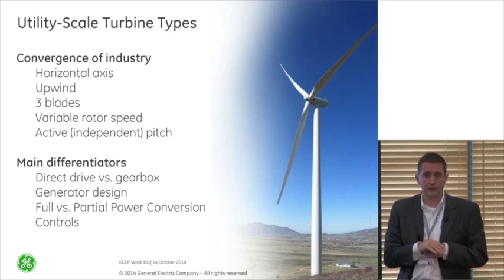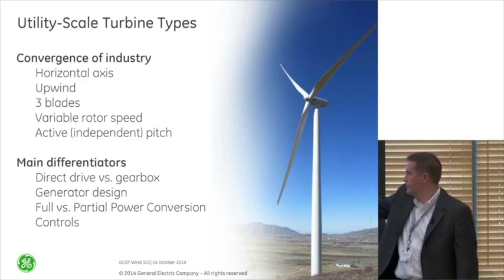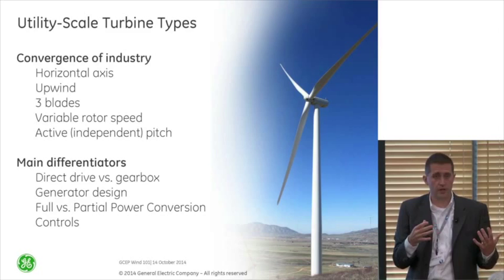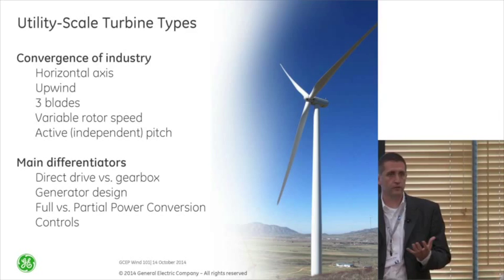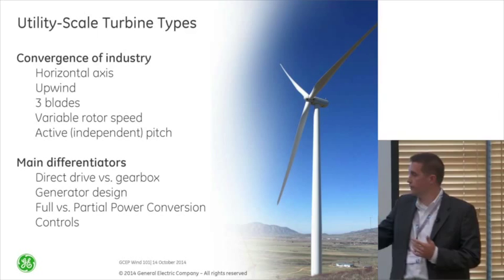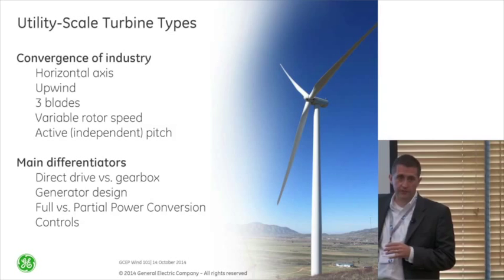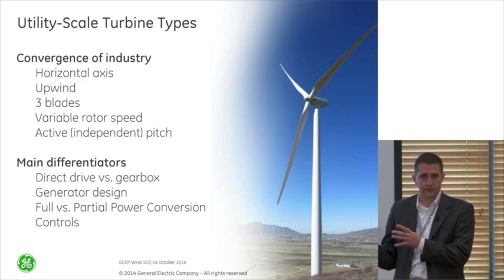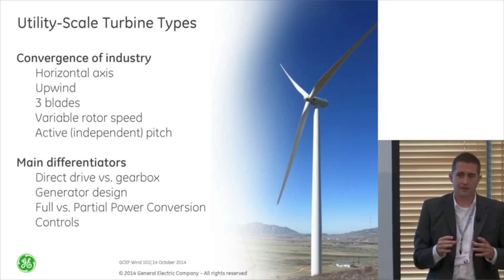The main differentiators between competitors is on the drive train — do you have a direct drive machine, which takes the rotational speed right into a generator, or do you step it up through a gearbox? There are also differences in generator design and the way you do power conversion. And each manufacturer has their own unique control strategy that we like to keep top secret — we typically don't know exactly how everyone else is controlling their wind turbine, but we assume there are quite a few differences.